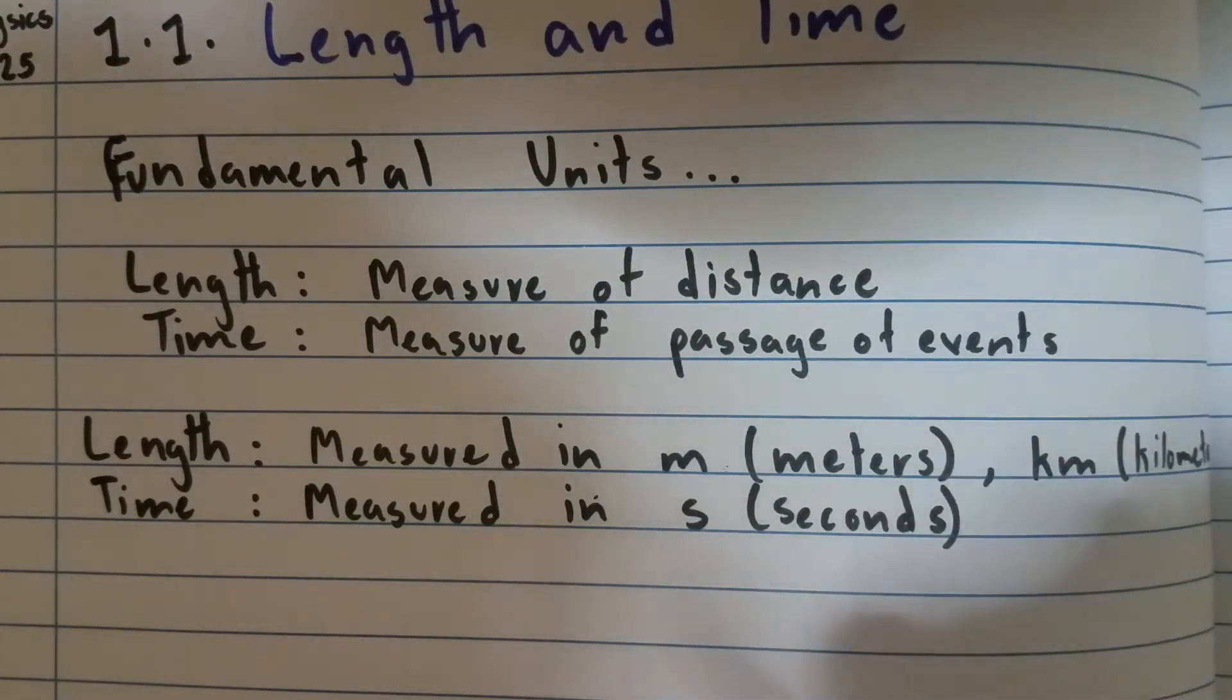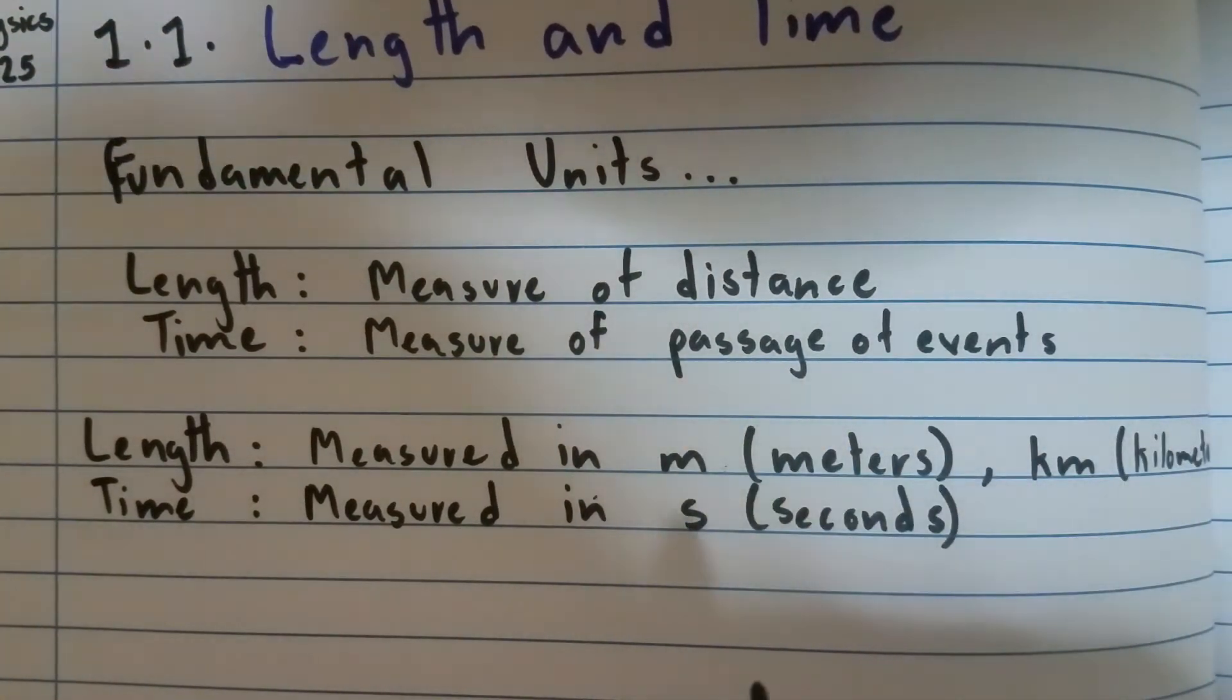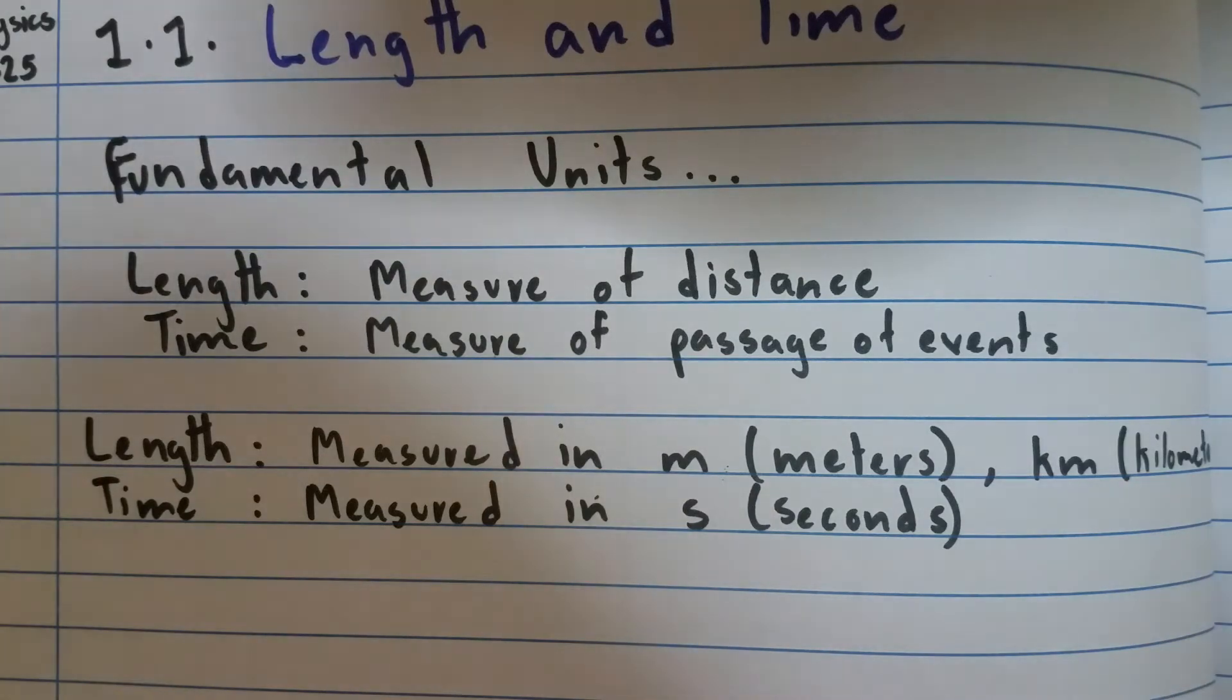And some of these are meters and seconds that I've included here. Meters is mainly used to measure length. But say in chemistry they might use centimeters to measure length because chemistry usually deals with smaller things.